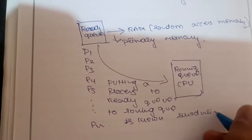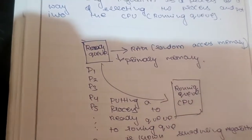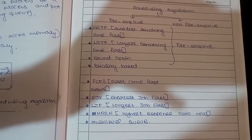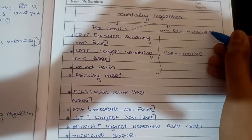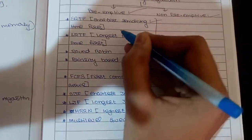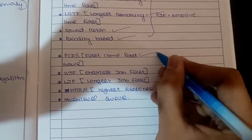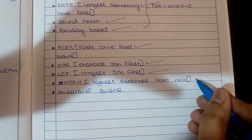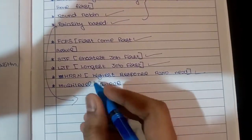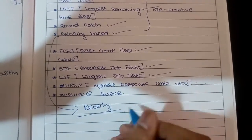So understand: ready queue to running queue — how do you run the scheduling algorithms? In our next section we will see a few types. Scheduling algorithms are of two error types: one is preemptive and one is non-preemptive. Preemptive includes SRTF (Shortest Remaining Time First), LRTF (Longest Remaining Time First), Round Robin, and Priority-based. Non-preemptive includes FCFS (First Come First Serve), SJF (Shortest Job First), LJF (Longest Job First), and HRRN (Highest Response Ratio Next).